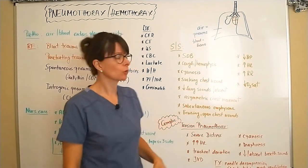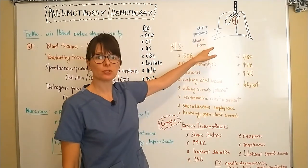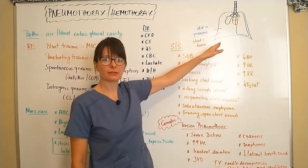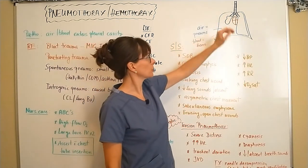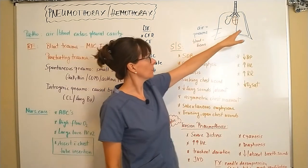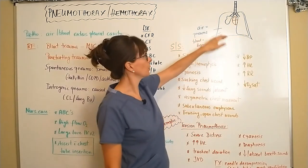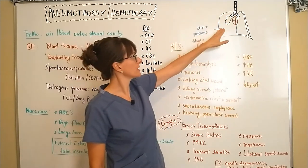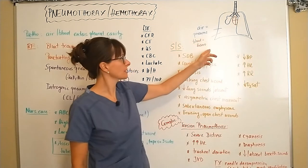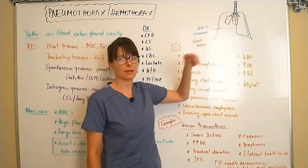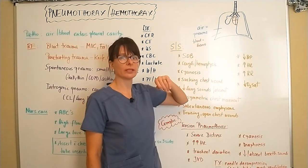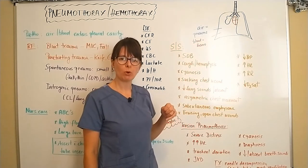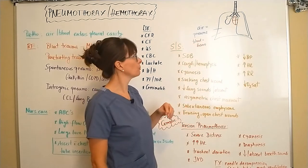Looking at the anatomy here, we have the chest cavity and the lung on the right side has been deflated — it's kind of shrunk up. The left lung is still normal. Up here we have the trachea and the two main bronchi. When air enters the pleural space it's called a pneumothorax, when blood is there it's called a hemothorax, but a patient can also have a combination — a pneumohemothorax.